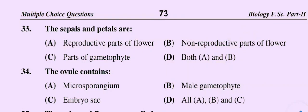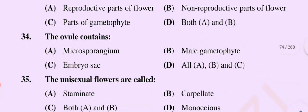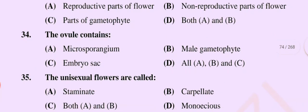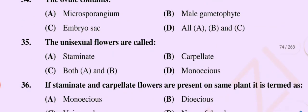Question number 34: The ovule contains — option A microsporangium, option B male gametophyte, option C embryo sac, option D all A, B and C. The correct option is option C: embryo sac. The ovule contains embryo sac.